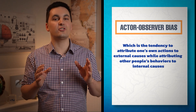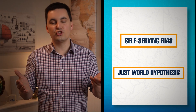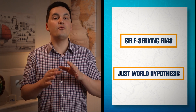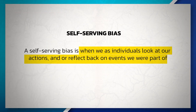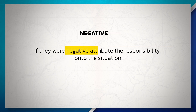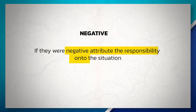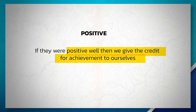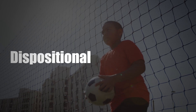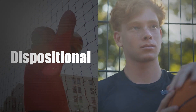This brings us to our next two concepts: the self-serving bias and the just world hypothesis, both of which were present in our previous examples. A self-serving bias is when we as individuals look at our actions or reflect back on events we were part of. If they were negative, we attribute the responsibility onto the situation, but if they were positive, we credit ourselves for the achievement. We often unknowingly tweak our perception of the power of the situation to make ourselves feel better — if it's a positive outcome, it's dispositional, and if it's a negative outcome, it was the situation.